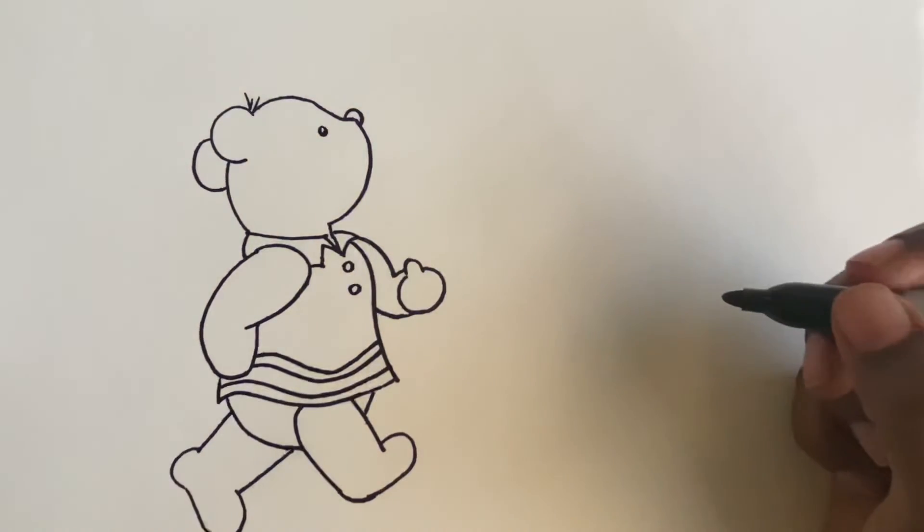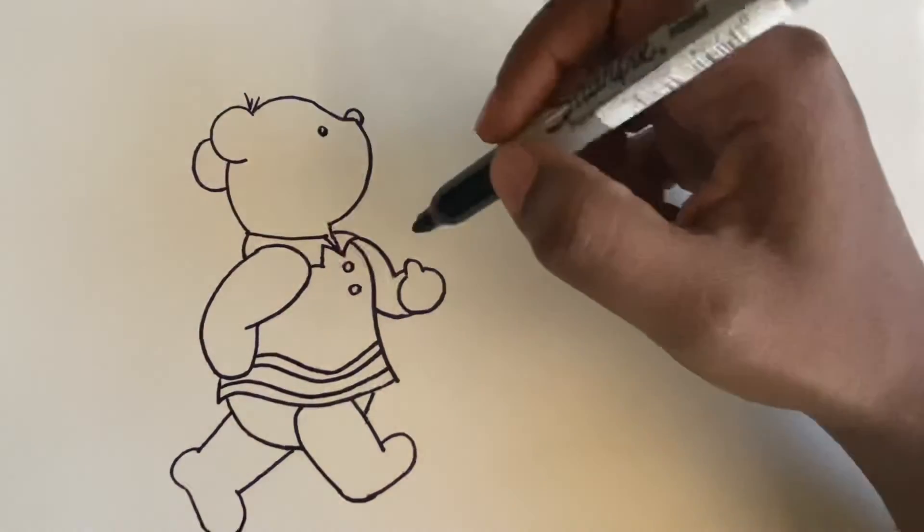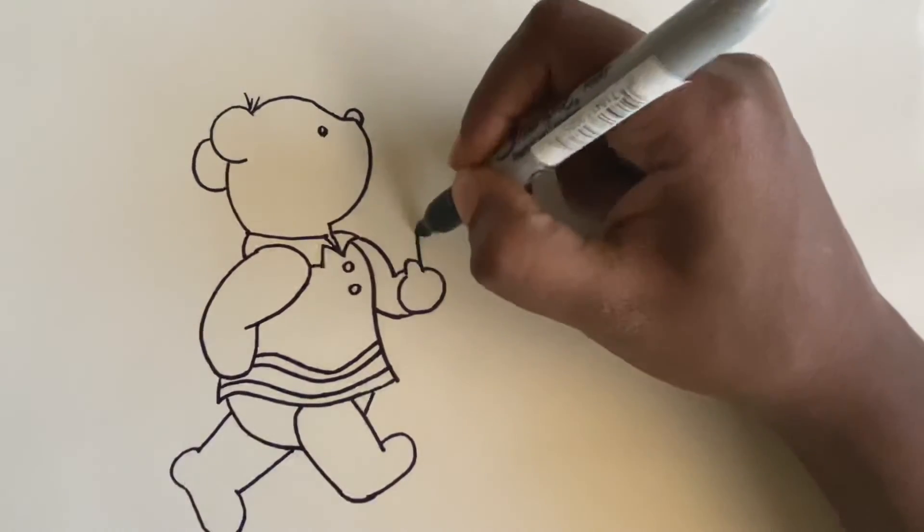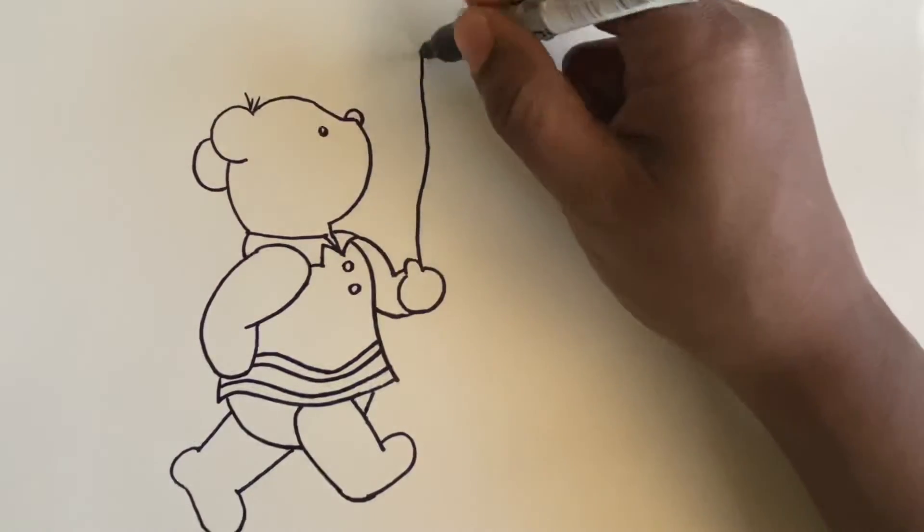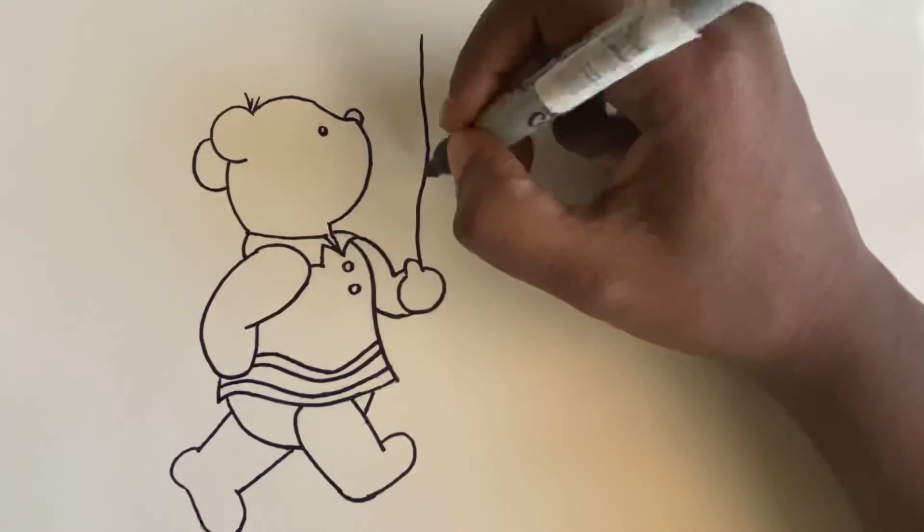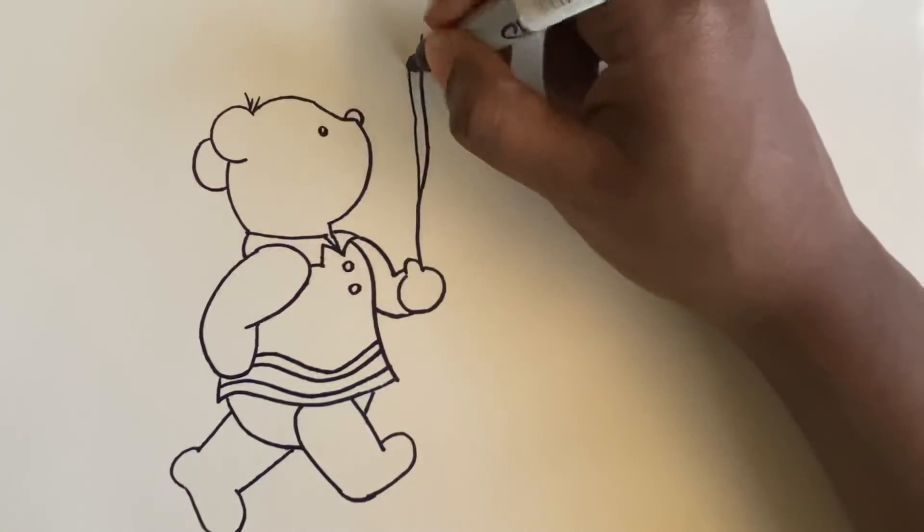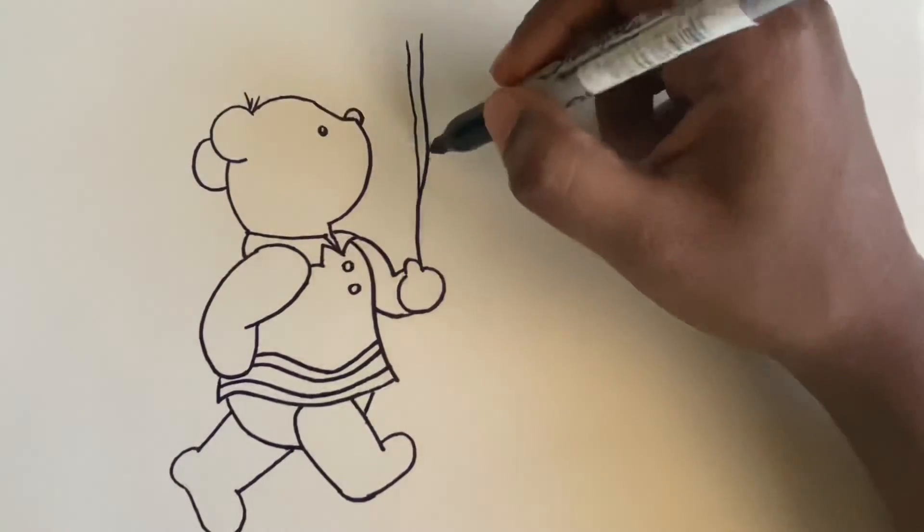Good job, his face is done. Now let's give the bear some balloons. Make some wiggly lines starting from the hand, and make sure they're taller than the bear so there are long strings.